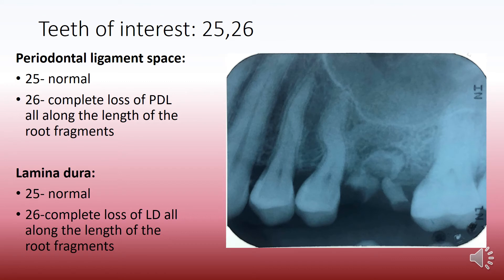The periodontal ligament space in case of 2-5 is completely normal even though the root is dilacerated. In relation to 2-6 we see that there is complete loss of the periodontal ligament space all along the length of the root fragments. When speaking about lamina dura, again in case of 2-5 it is normal, whereas in case of 2-6 it is completely lost all along the root fragments.